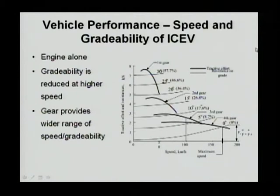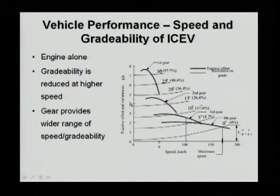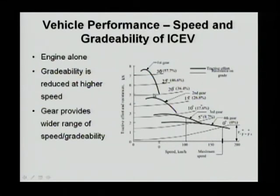To evaluate vehicle performance, we need to satisfy acceleration in addition to overcoming all resistances. Normally, we calculate the total force — not including acceleration — from the three resistive forces: rolling resistance, gravitational, and aerodynamic. We plot them as a function of speed and for each different grade. On the diagram, the more or less horizontal lines show the resistive force.